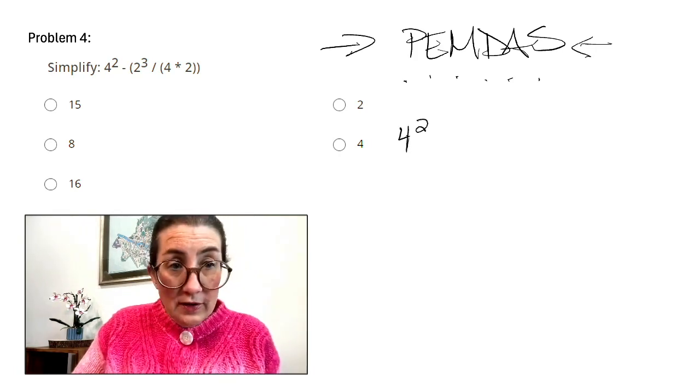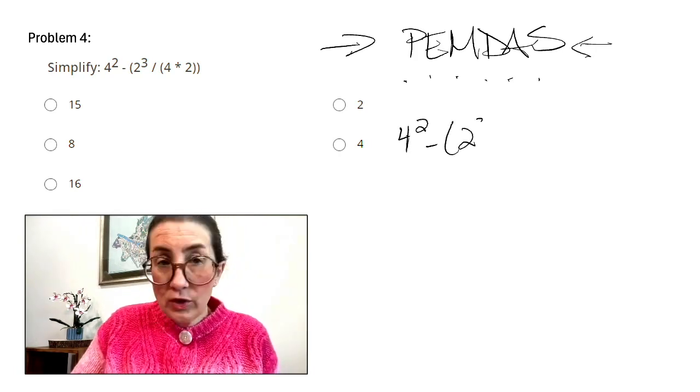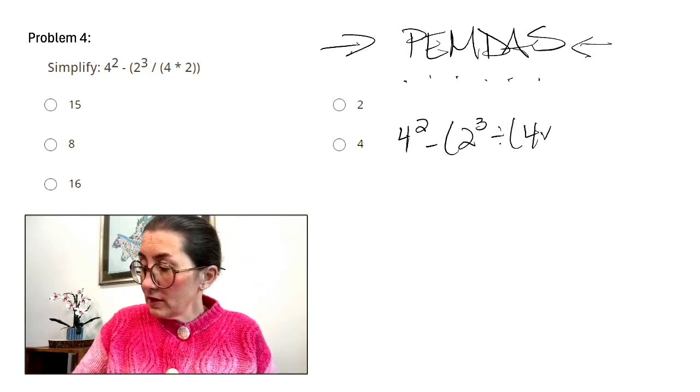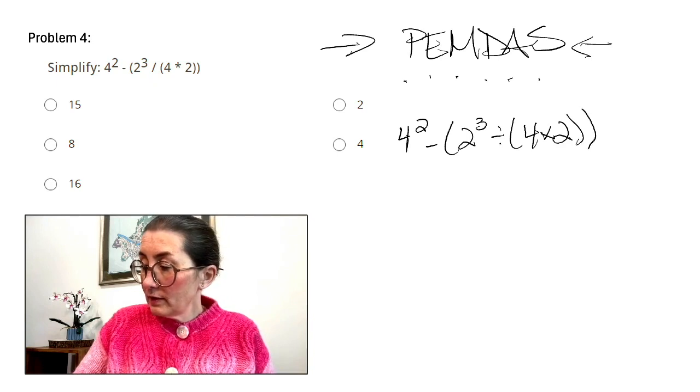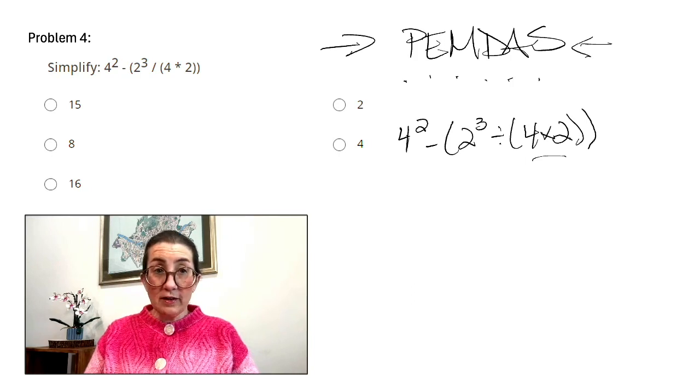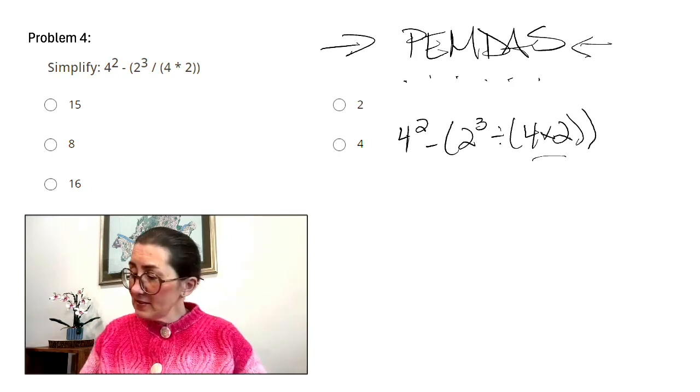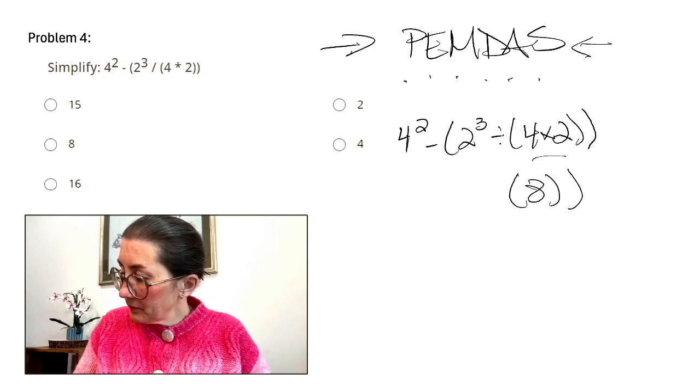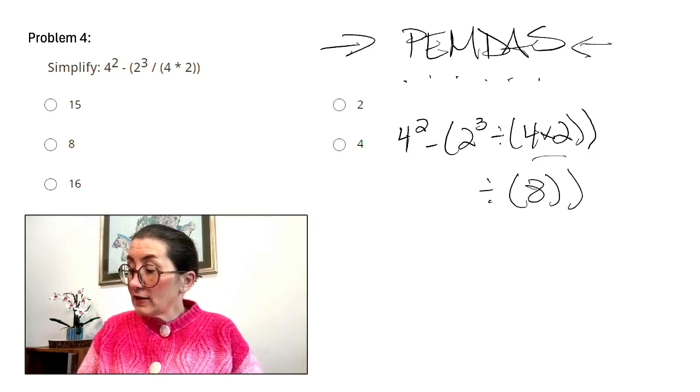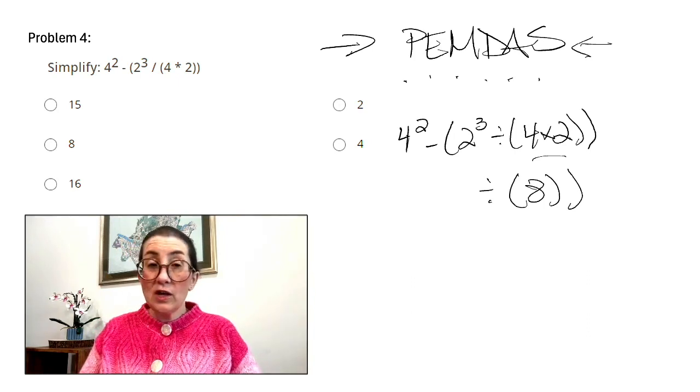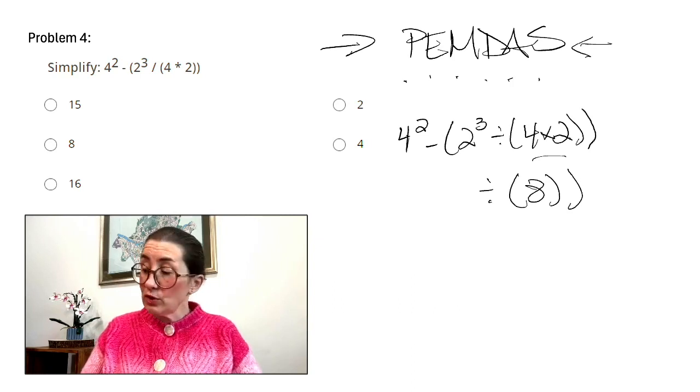4 squared minus 2 cubed divided by 4 times 2. So we're going to solve these ones first. They're in parentheses. So 4 times 2 is 8. Next, we've got an exponent in the parentheses. So let's do that next. 2 cubed is 8. 2 times 2 times 2.